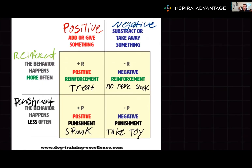Operant conditioning is a type of learning that occurs through positive and negative punishments or reinforcement. It was developed by B.F. Skinner in the mid-20th century, and this theory posits that behavior is shaped by the rewards and punishments that follow it. Through this process, animals, including us humans, can learn to associate certain behaviors with certain outcomes and adjust their behavior accordingly — aka learning.